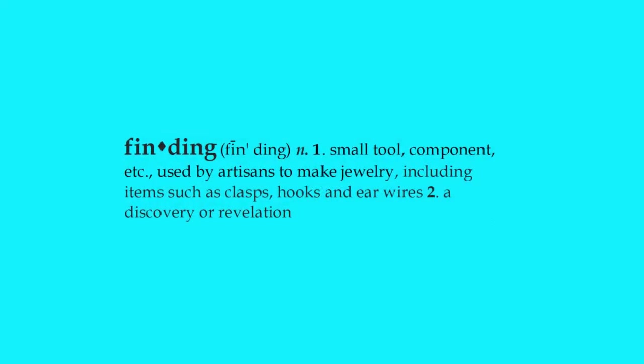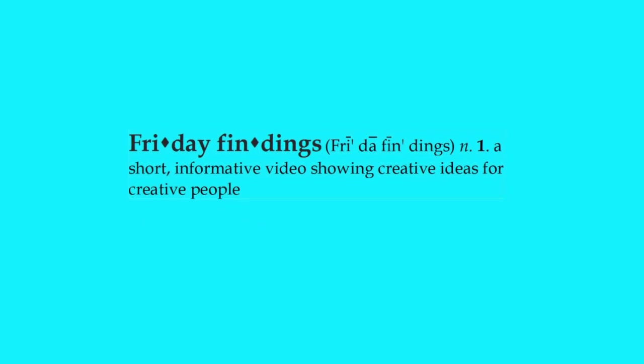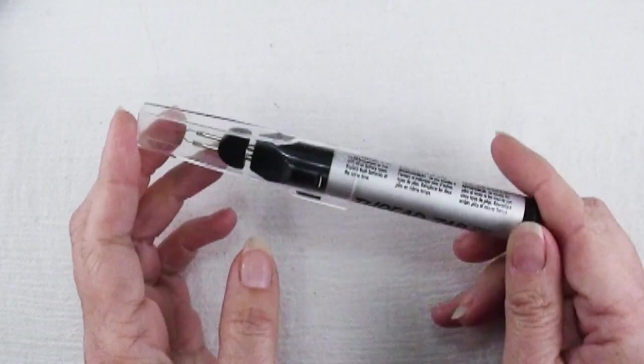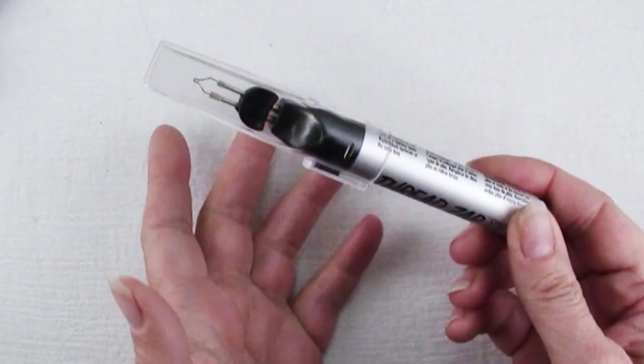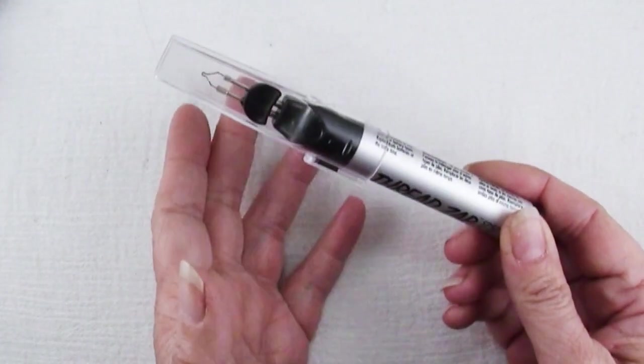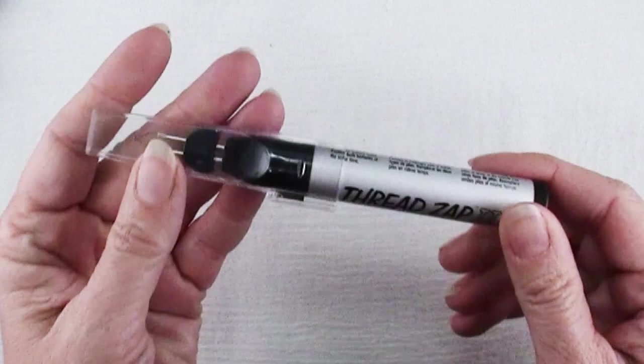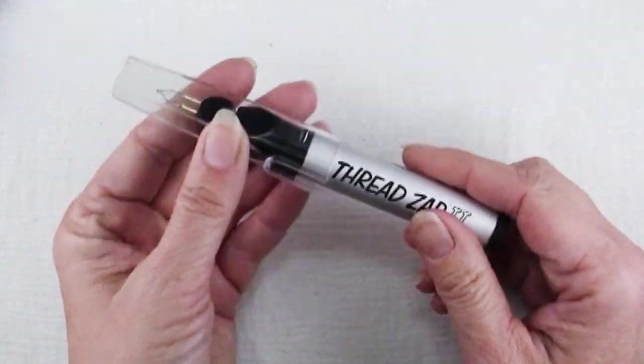Hi there, Sandy here. Welcome to another Friday Findings video at KeepsakeCrafts.net. Before we get into the six things you shouldn't do with a thread burner, here's a quick overview of what this tool does and how it works. This is mine, it's the Thread Zap 2 by Beadsmith.